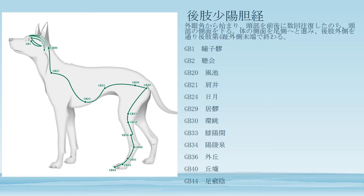The important acupoints are GB1, GB2, GB20, GB21, GB24, GB29, GB30, GB33, GB34, GB36, GB40, and GB44.